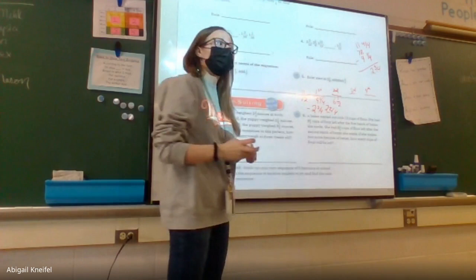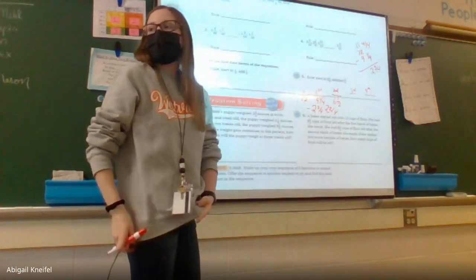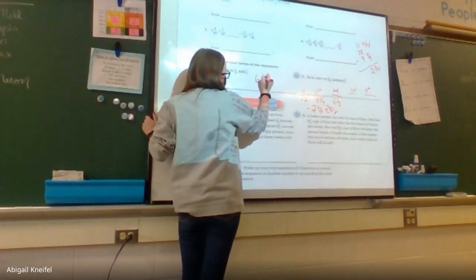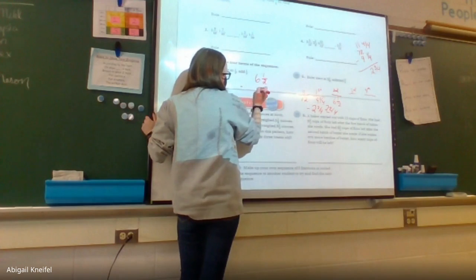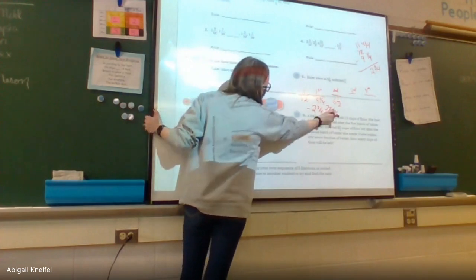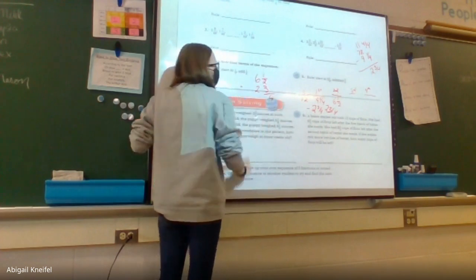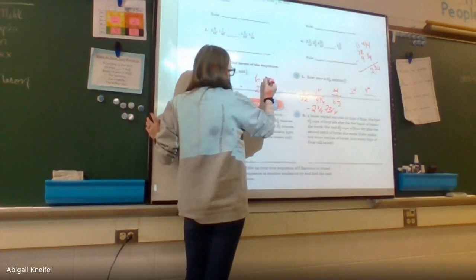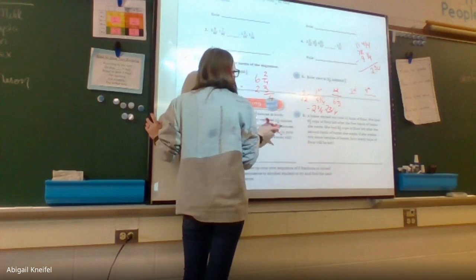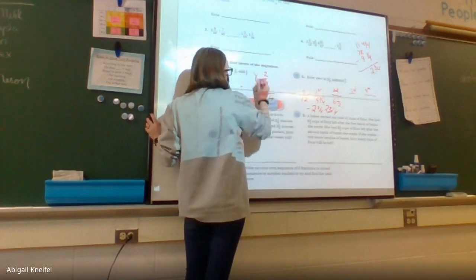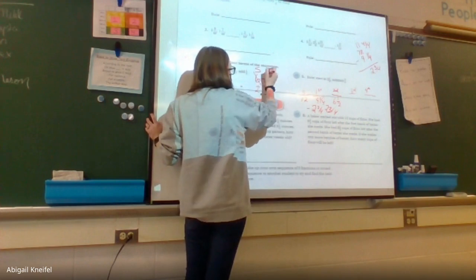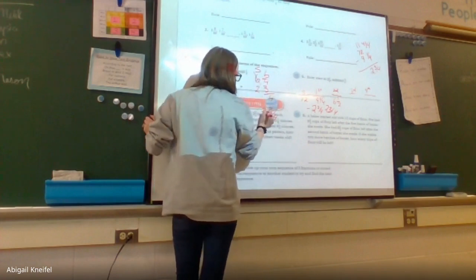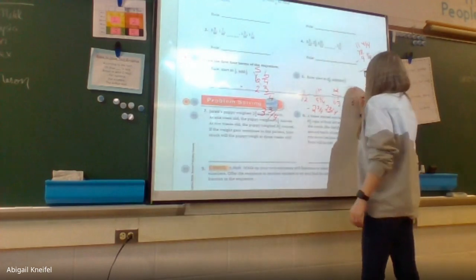To find the third term, I subtract two and three fourths from six and a half. I need the same common denominator — I change one half to two fourths. Can I subtract yet? No — I can't take three away from two, so I borrow. Six becomes five; two becomes six. Six minus three is three over four; five minus two is three. Third digit: three and three fourths.